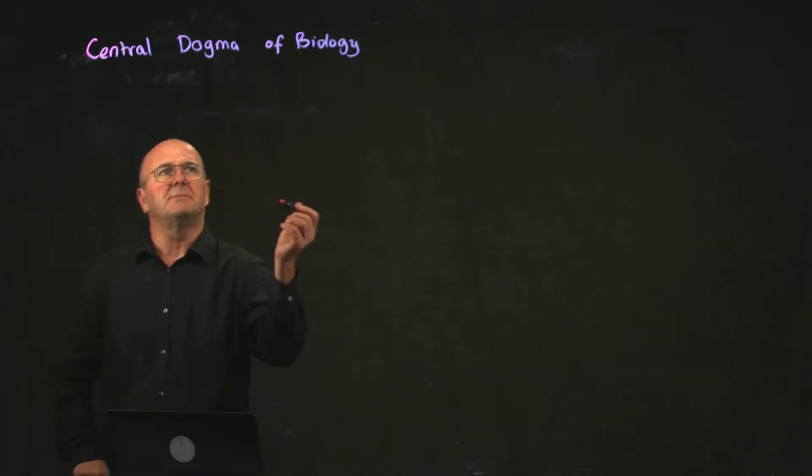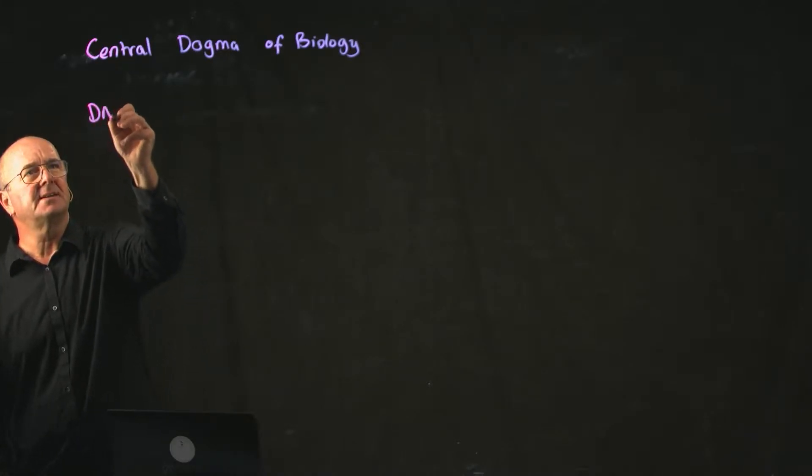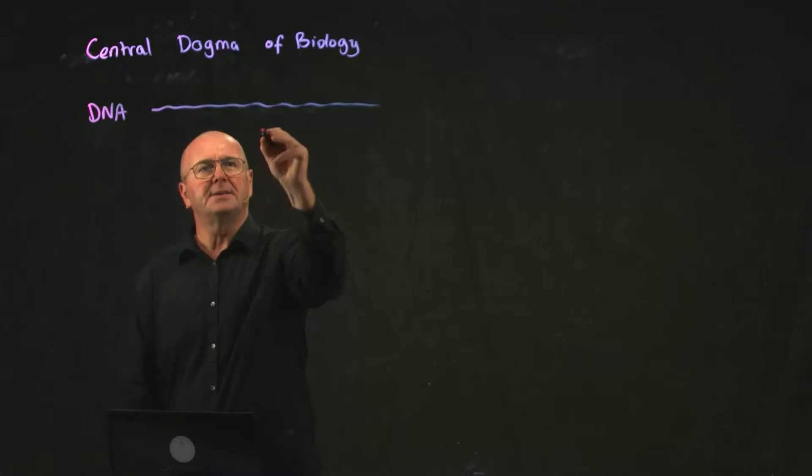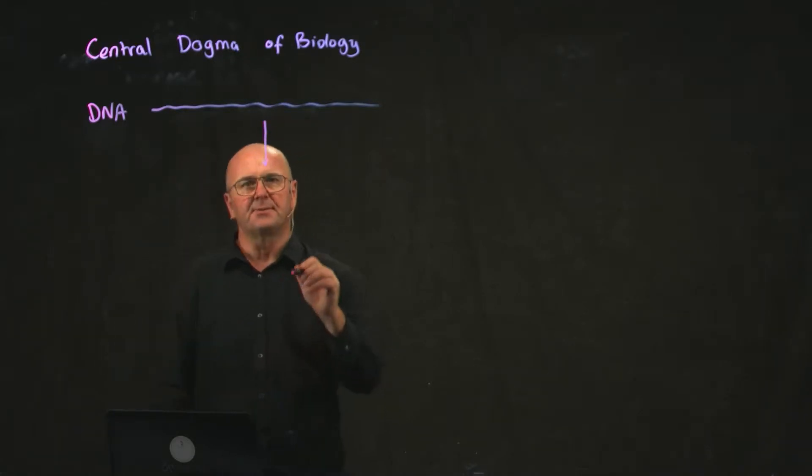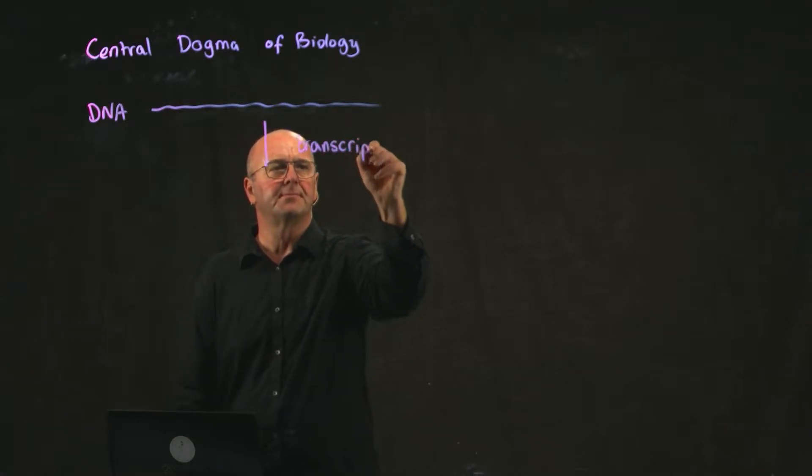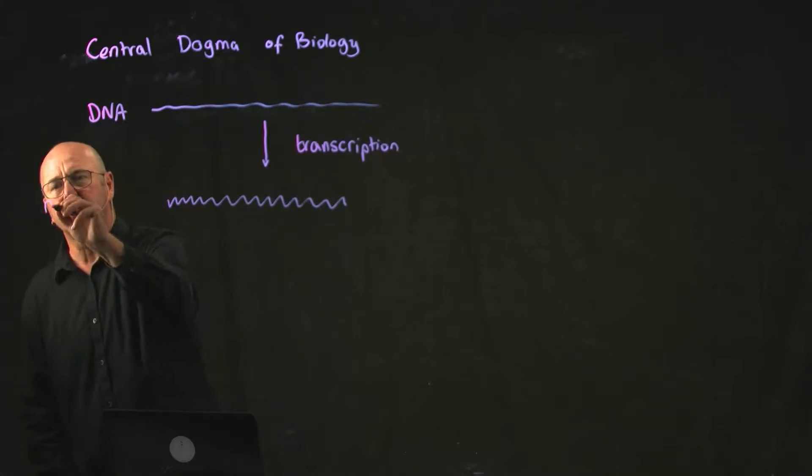So the central dogma of biology is very simple. It's basically that DNA is the genetic code, and DNA is converted through a process called transcription to what's called messenger RNA.